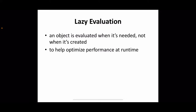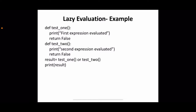By doing this, it helps to optimize the performance at runtime. Let us see an example for lazy evaluation. We are defining two different functions. The first one is test1 and the second one is test2. In test1, we are printing 'first expression evaluated' then returning false. In the test2 function, 'second expression evaluated' is displayed, then it returns false. In the main thread, we are calling these two functions using OR: test1 or test2. The result is the OR applied to these two function calls.